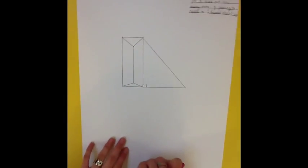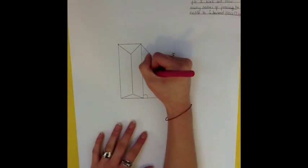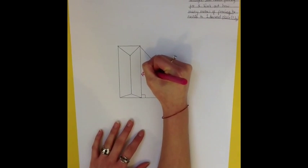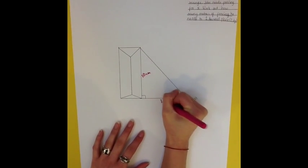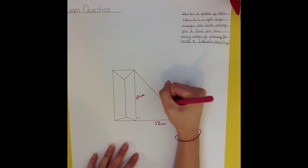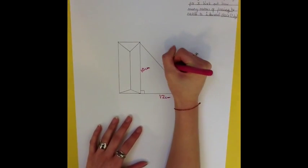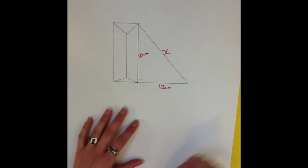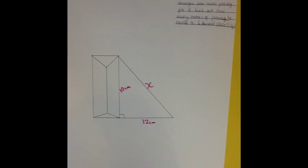Here's a question for you to do. Take the length of this side to be 10 cm, and the length of this side to be 12 cm. Work out the length of x. Pause here.